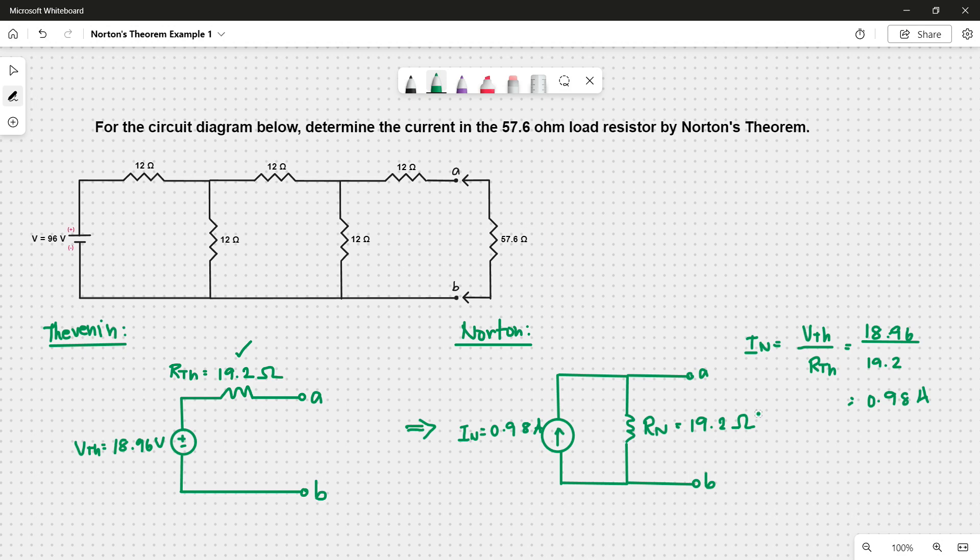Now that we have this, we can calculate the load current by applying the formula. I-N or I-S-C for short circuit current, times the Norton resistance R-N, over R-N plus R-L, or the load resistance. So we have 0.98 times 19.2 over 19.2, plus 57.6, and we will get 0.25 amps.